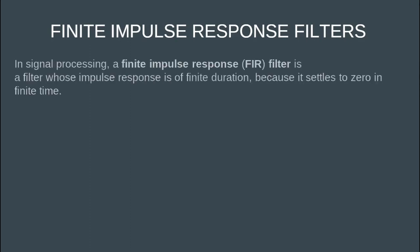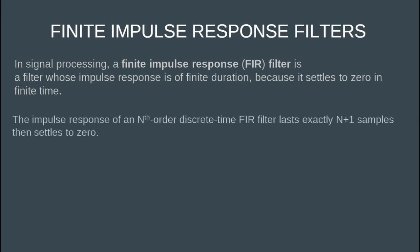In signal processing, a finite impulse response filter is a filter whose impulse response is of finite duration because it settles to zero in finite time. The impulse response of an Nth-order discrete-time FIR filter lasts exactly N+1 samples and then settles to zero. Here, N+1 is the length of the Nth-order discrete-time FIR filter.